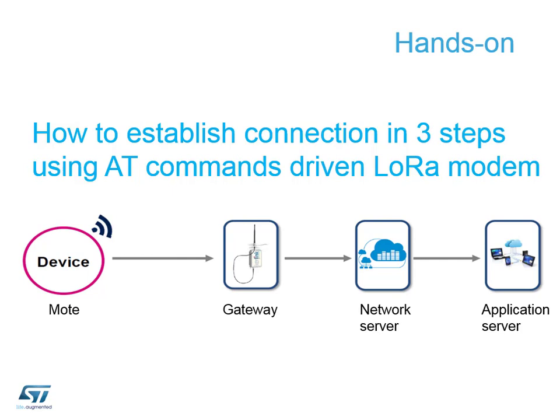The gateway is literally there as a format changer from RF to a cable structure. The network server — there's only one in the LoRa network and it controls the whole network. It gives out IDs to each device when they join and controls the routing of all traffic from the device through to the application servers, which do the control, monitoring, or analysis of all connected devices.